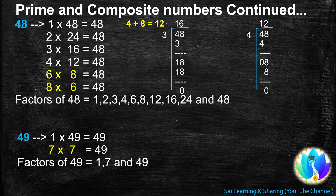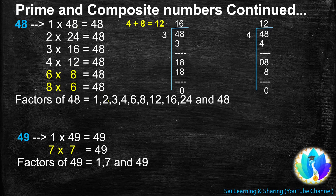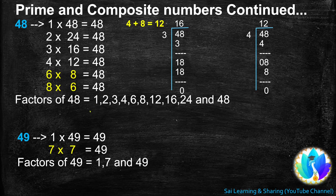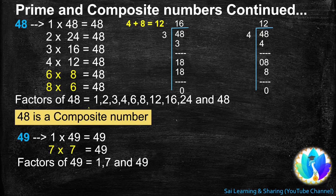Factors of 48: 1, 2, 3, 4, 6, 8, 12, 16, 24, and 48. A number that gets more than 2 factors is a composite number. So, 48 is a composite number.